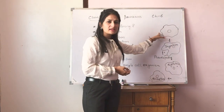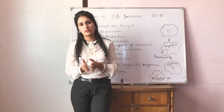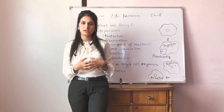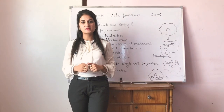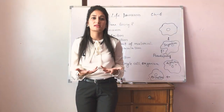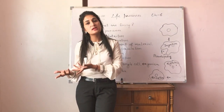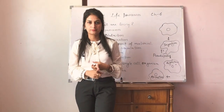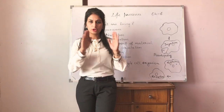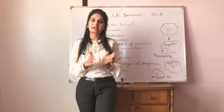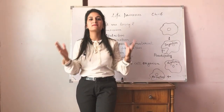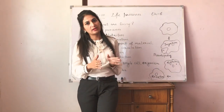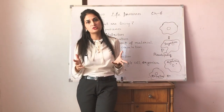Firstly, amoeba is an irregular single-cell organism. It does not have any system or organ to intake its food. So what is the process by which it can take food? That process involves diffusion — meaning the body of that organism is in direct contact with the environment.